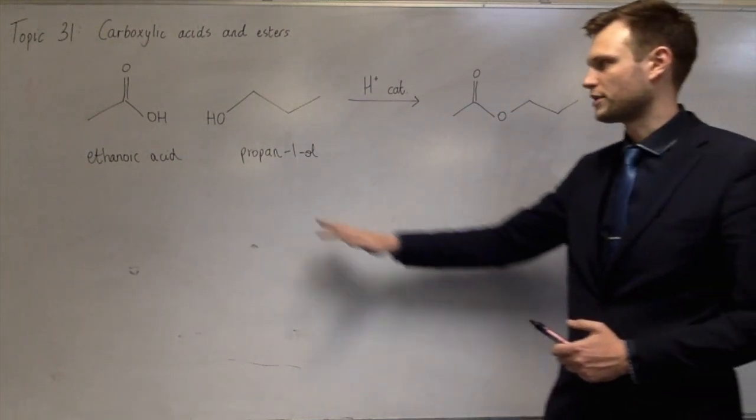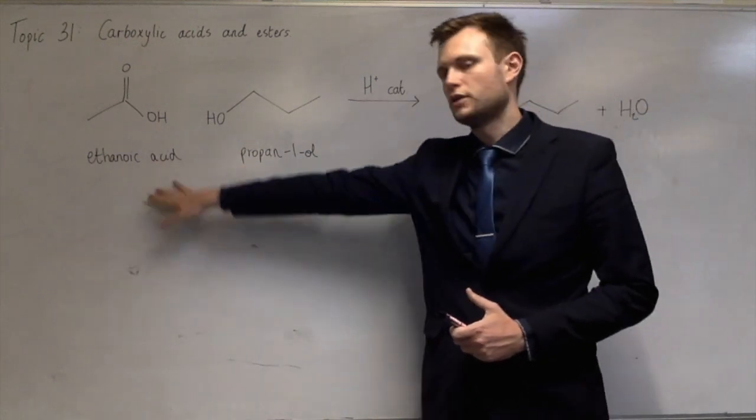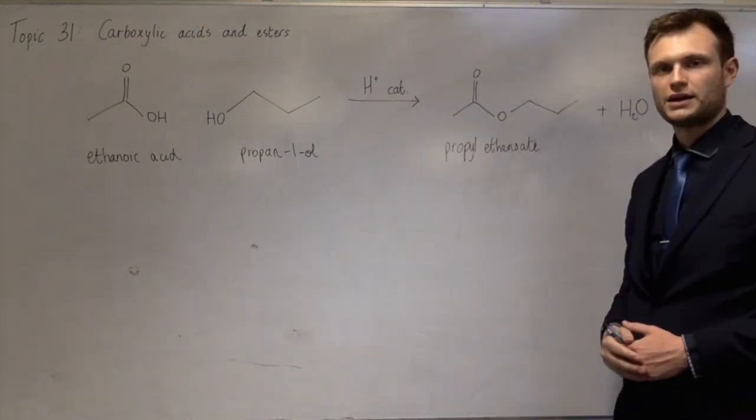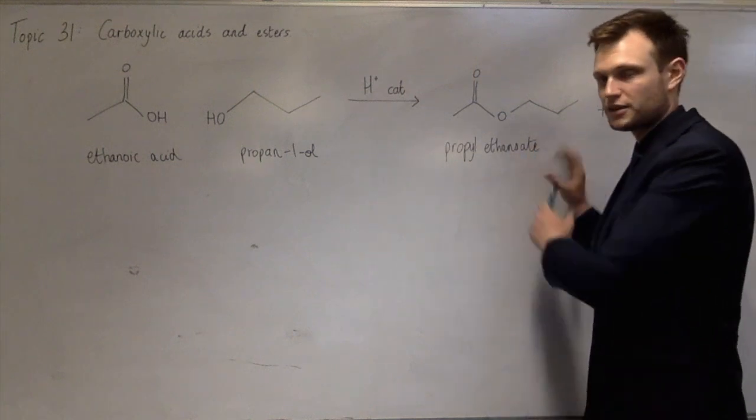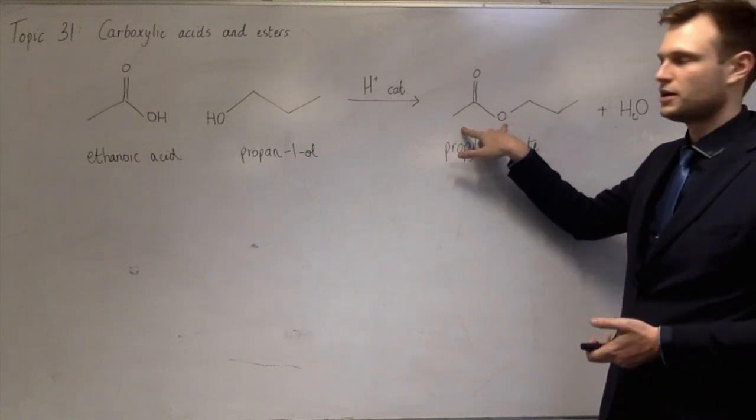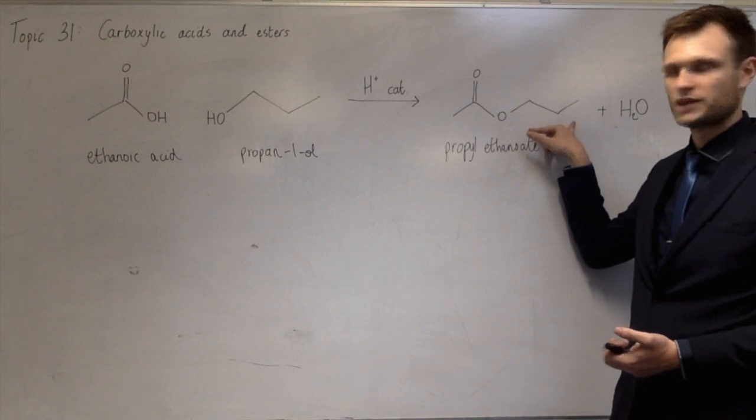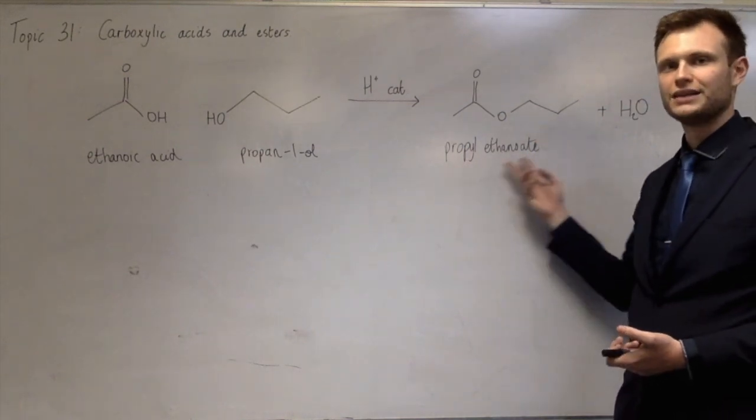The first part always comes from the alcohol that you used and the carboxylate comes from the carboxylic acid that you used. And if you've just been given the structure of an ester, then what I do is look for the bit which would have come from the carboxylic acid and that's the second part of the name. And then the part which would have come from an alcohol is the first part of the name. It always goes alkyl alkenoate.